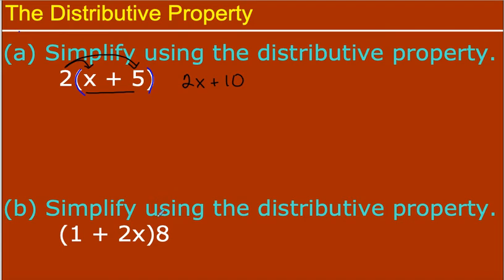In this example, I just flipped it around using the commutative property, but that 8 is still being multiplied to the whole quantity, giving 8 plus 16X.